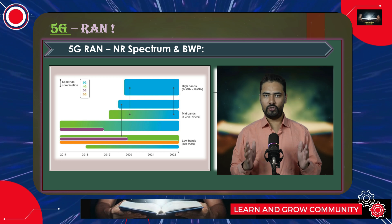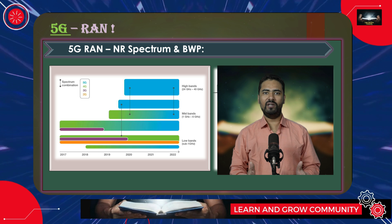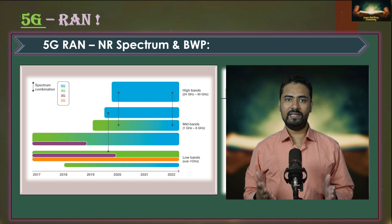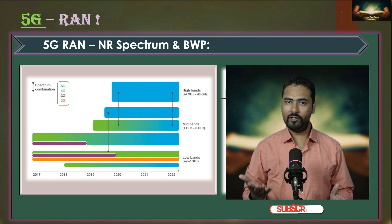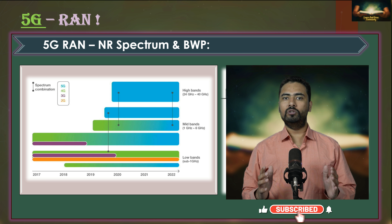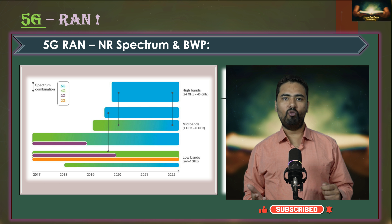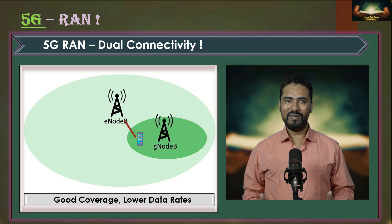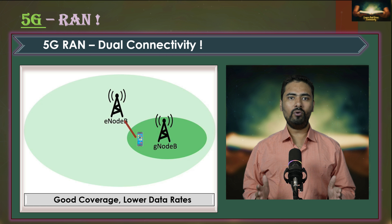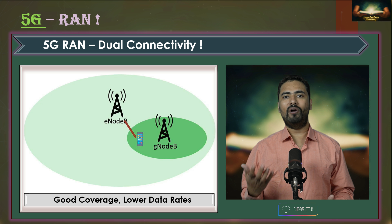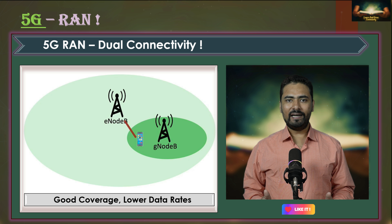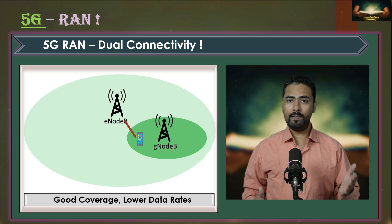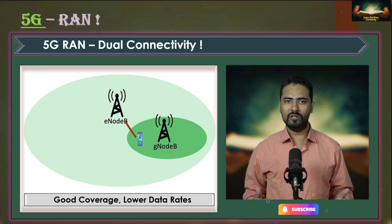In the last session we talked about the spectrum allocation in 5G NR. We also discussed some concepts in 5G NR like carrier aggregation and bandwidth part, which are important for optimizing 5G performance and network efficiency. Now in this session we will be talking about the dual connectivity concept in 5G NR. Dual connectivity is a feature that enhances the performance and reliability of modern wireless networks.